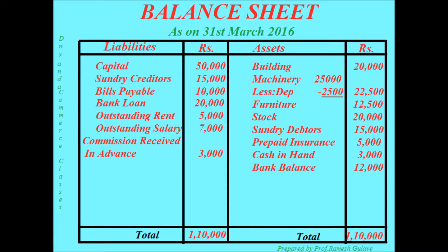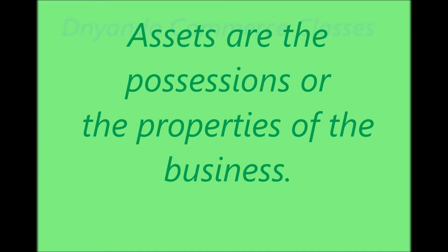In this balance sheet, under liabilities, you can see that there is capital, sundry creditors, bills payable, bank loan, outstanding rent, outstanding salary, and commission received in advance. Capital is part of equity, and sundry creditors, bills payable, bank loan, and outstanding items are examples of third-party dues.